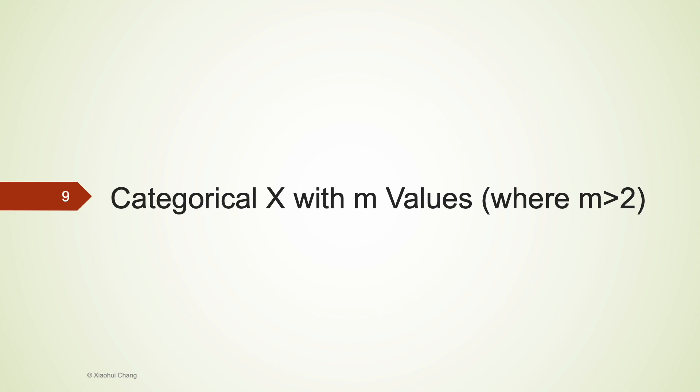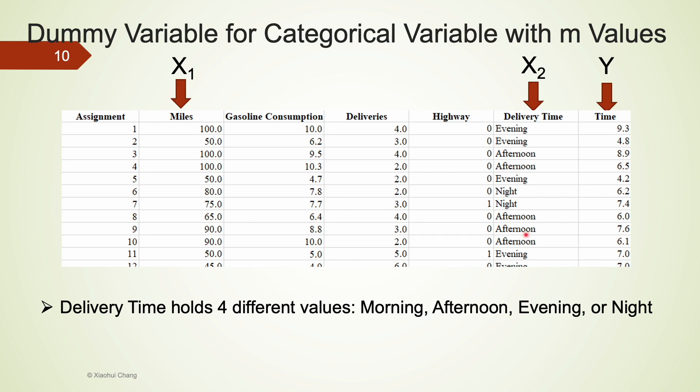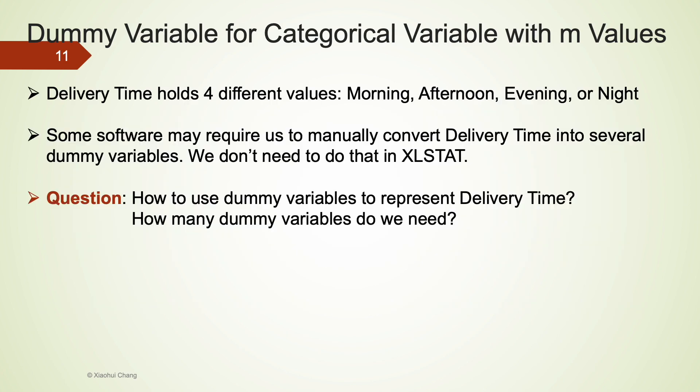Next, let's move on to categorical independent variables with more than two values. This time, we consider the delivery time variable. Delivery time holds four different values: morning, afternoon, evening, and night. Some software may require us to manually convert delivery time into several dummy variables. We don't need to do that in xlstat. One question for you to think about is, how can we use dummy variables to represent a delivery time? And how many dummy variables do we need to use?